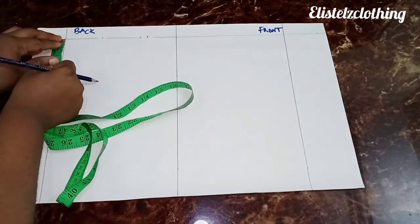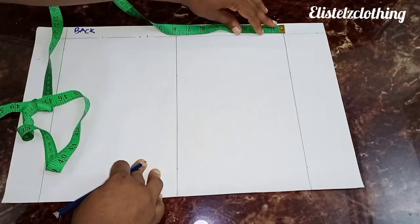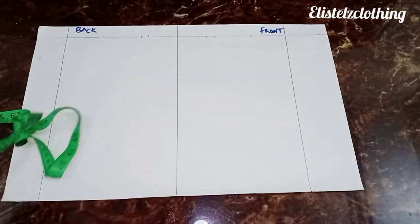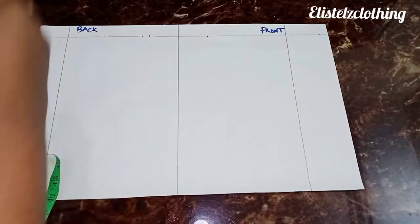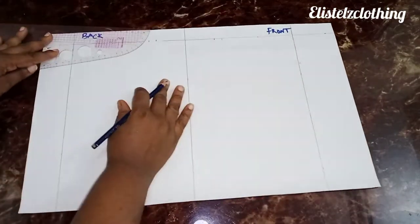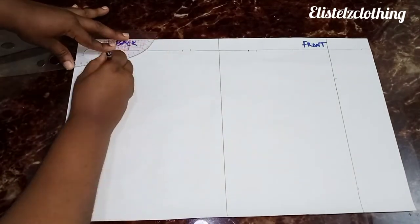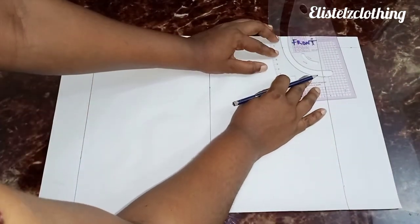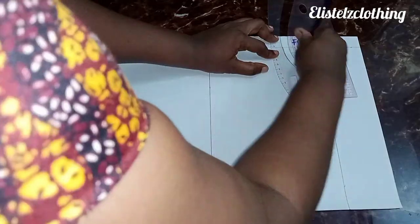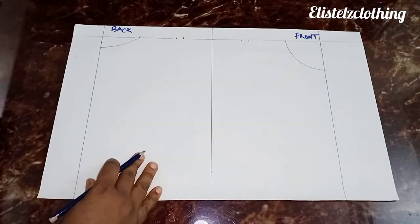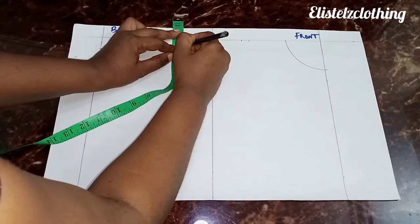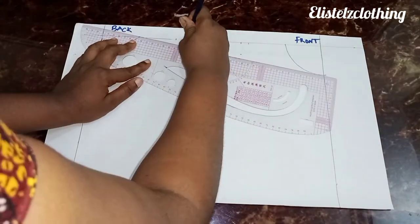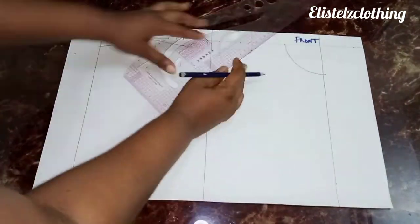We're going to add 0.5 seam allowance. Her neck width for the back is 2.5 by 1.5 depth. For the front we'll mark our shoulder at 5, and also add a 0.5 seam allowance. Neck width for the front is 2.5 by 2. Connect these points together, then slope the back with 0.5 inch and the front with 1 inch — this is standard. Connect it to the neck width.